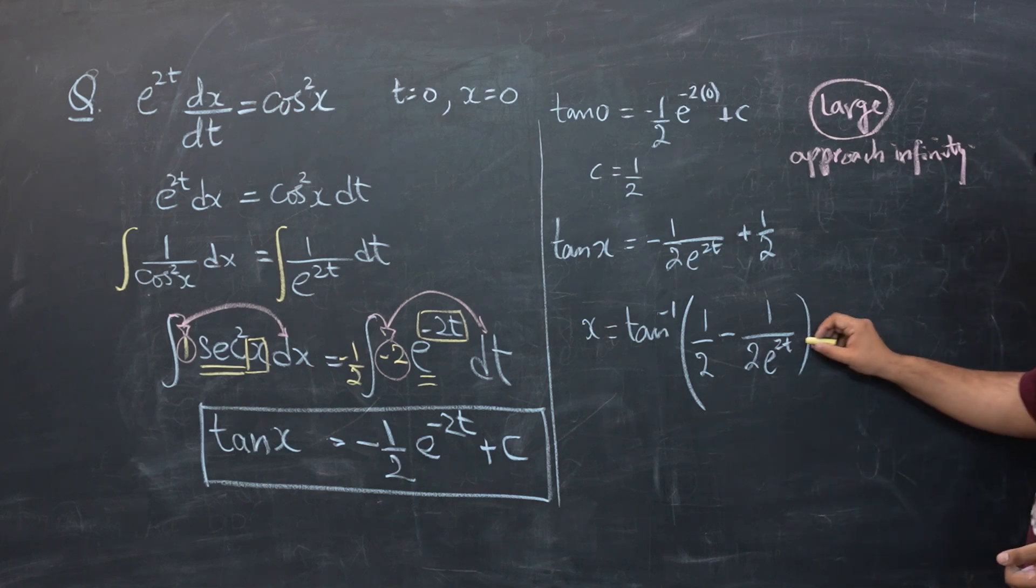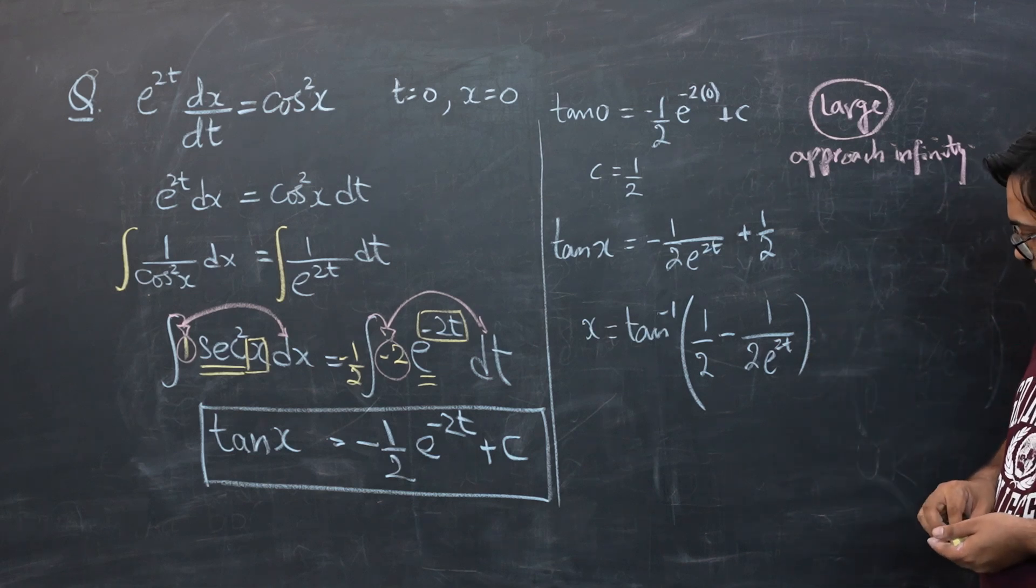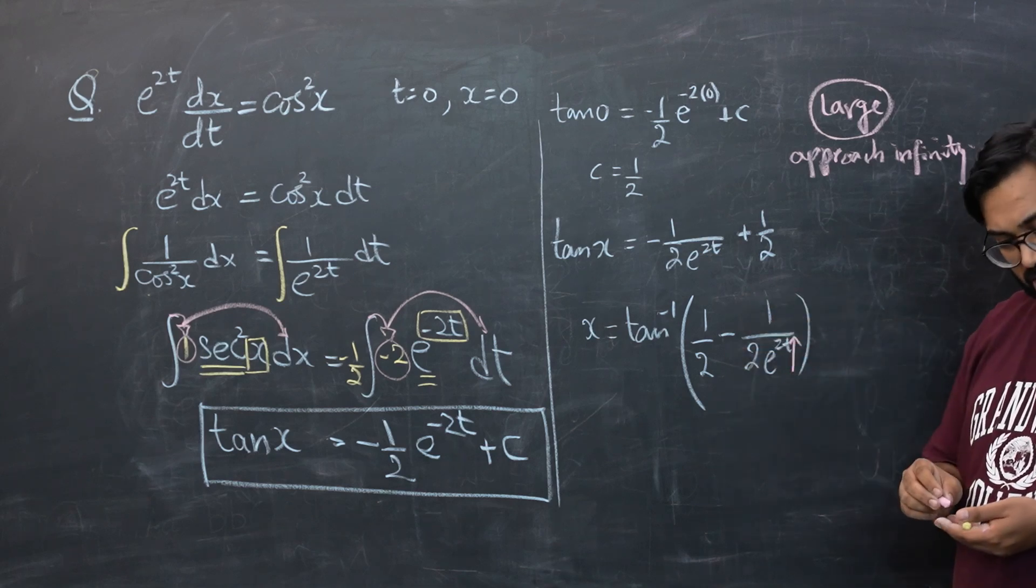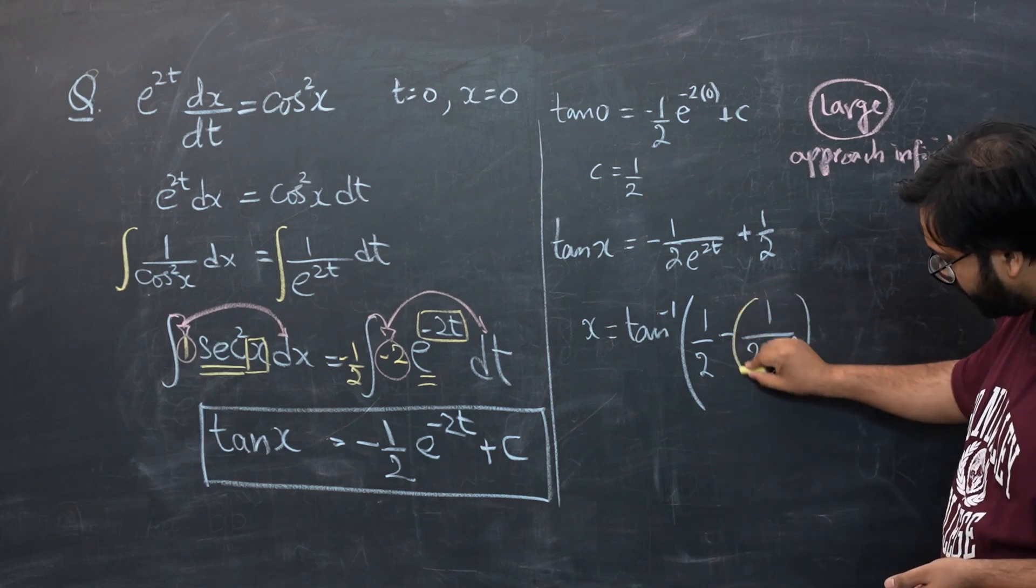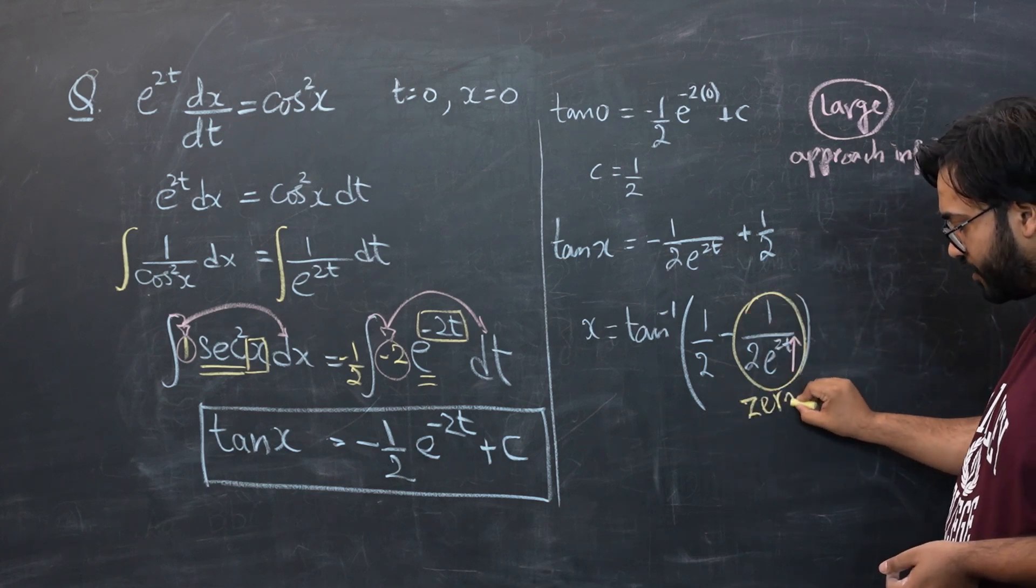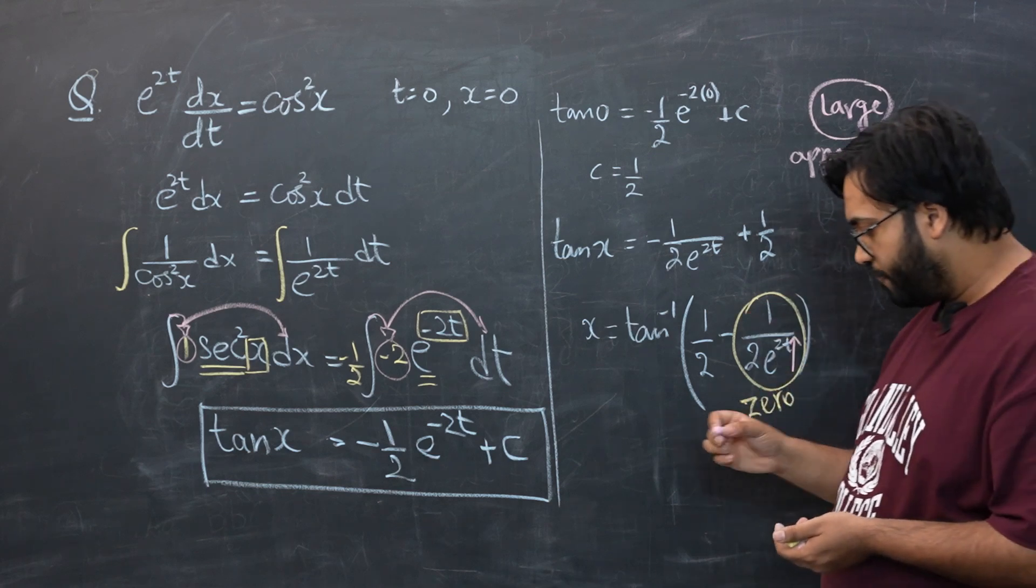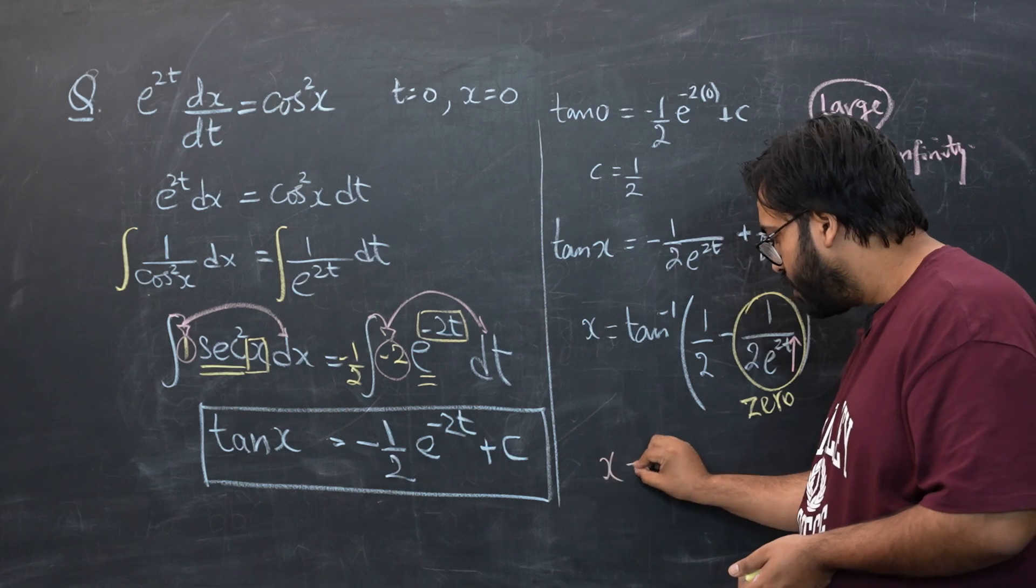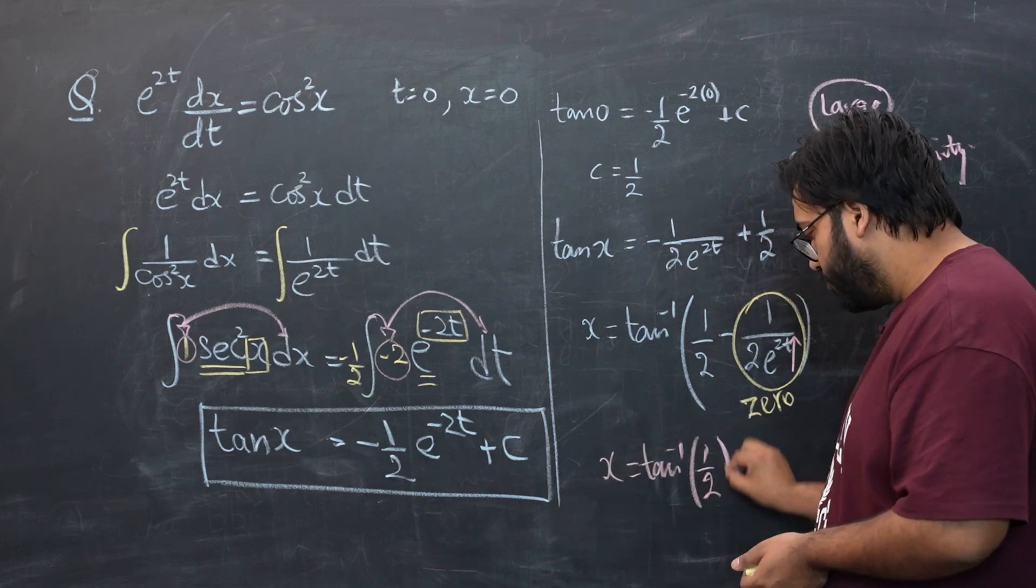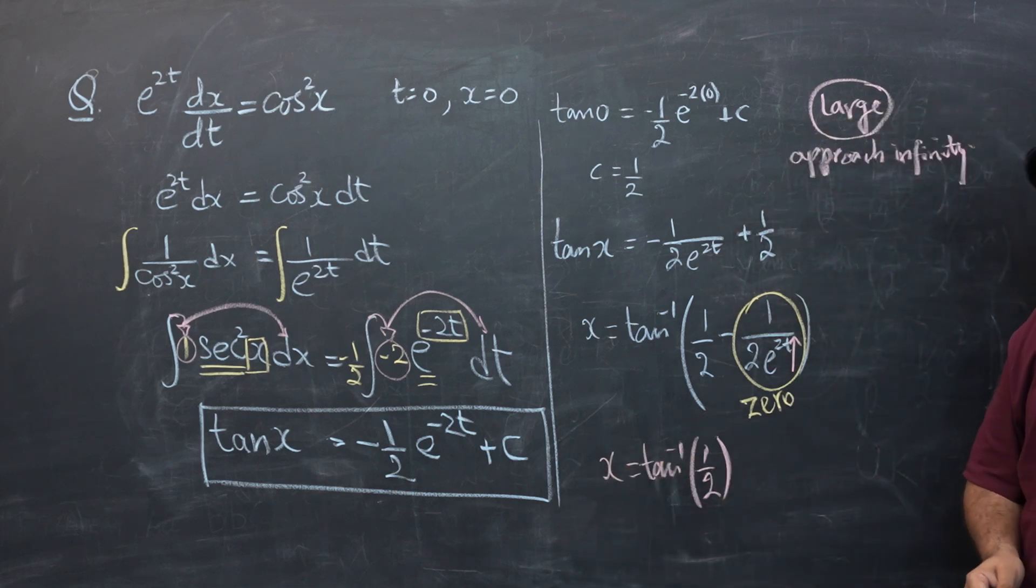For example, if t becomes very large over here you guys can see that the denominator of this fraction becomes very large and eventually this whole fraction will reduce to a zero. And the value of x will then be tan inverse of 1/2. So that is the value of x when t becomes very large.